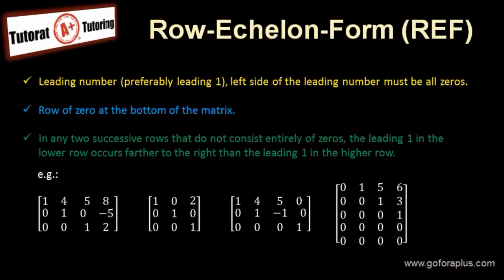So what is row echelon form? Now there are actually three points that we have to look at. The first point is the leading number, preferably leading 1. Left side of this leading number must be all zeros.